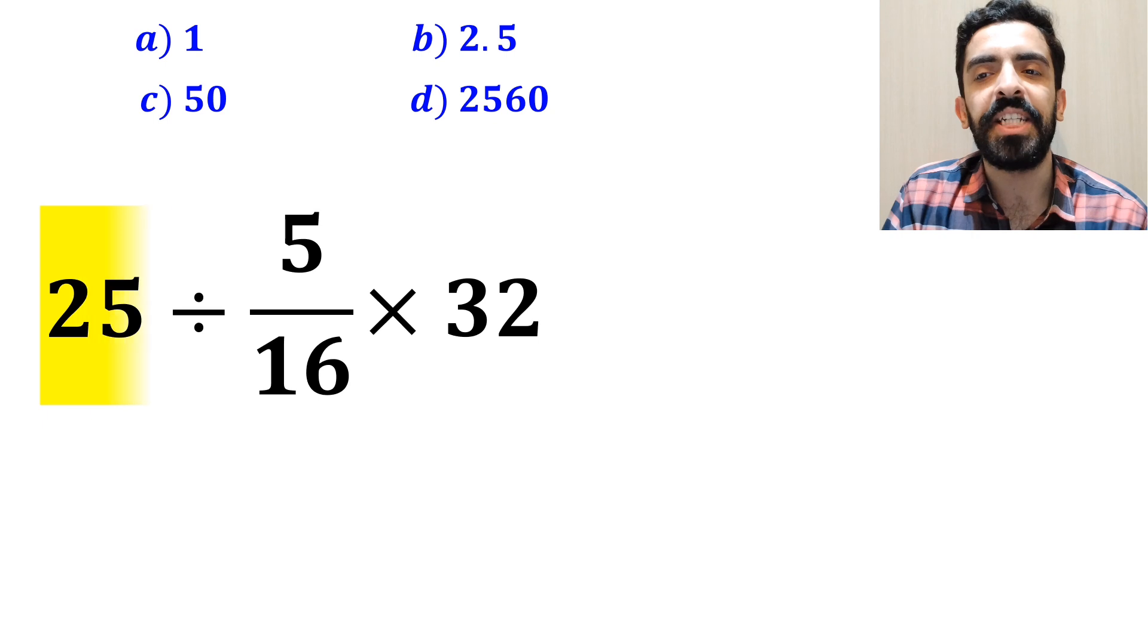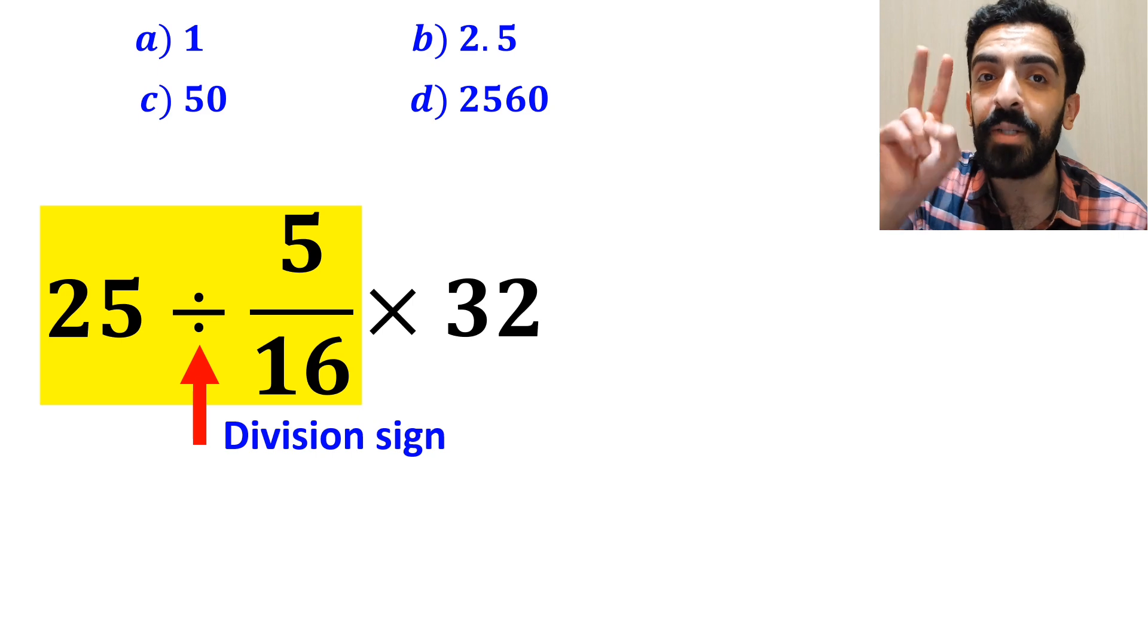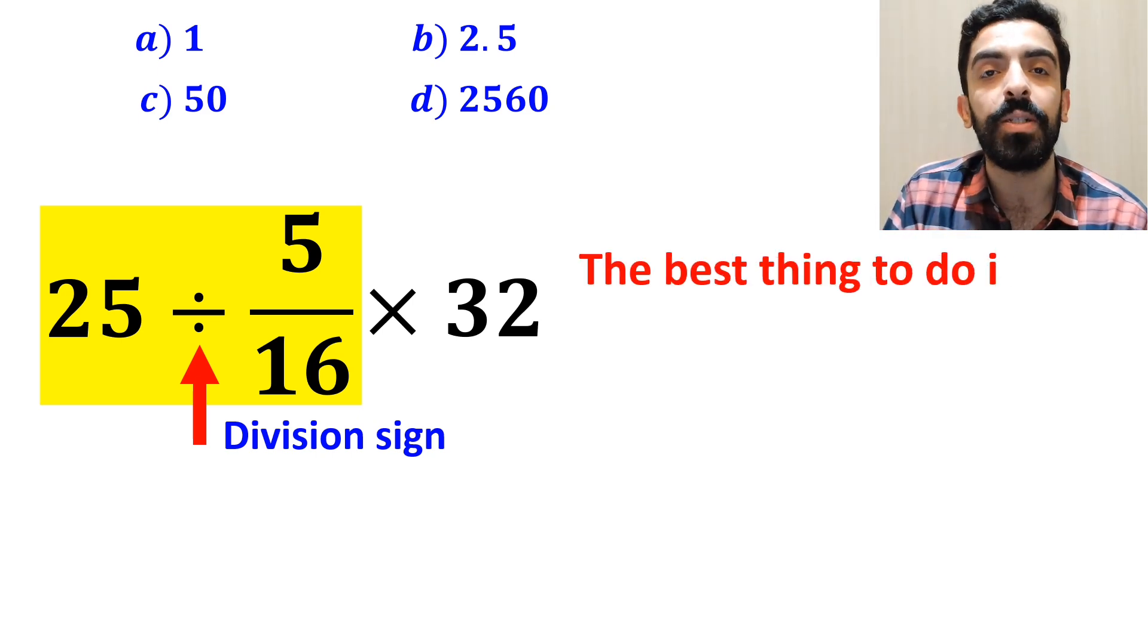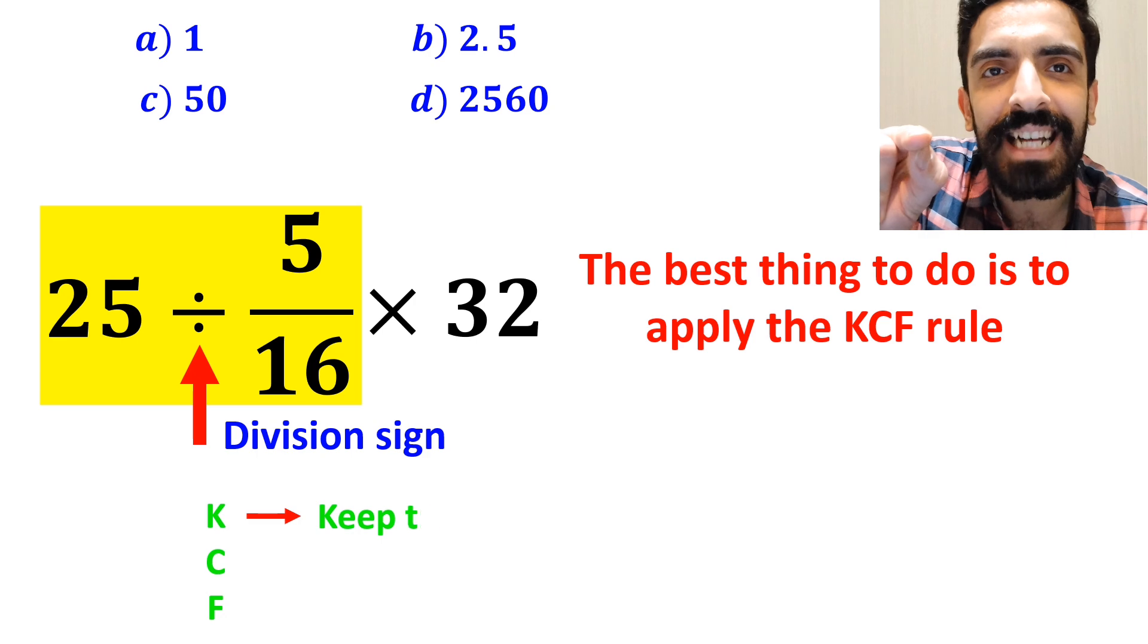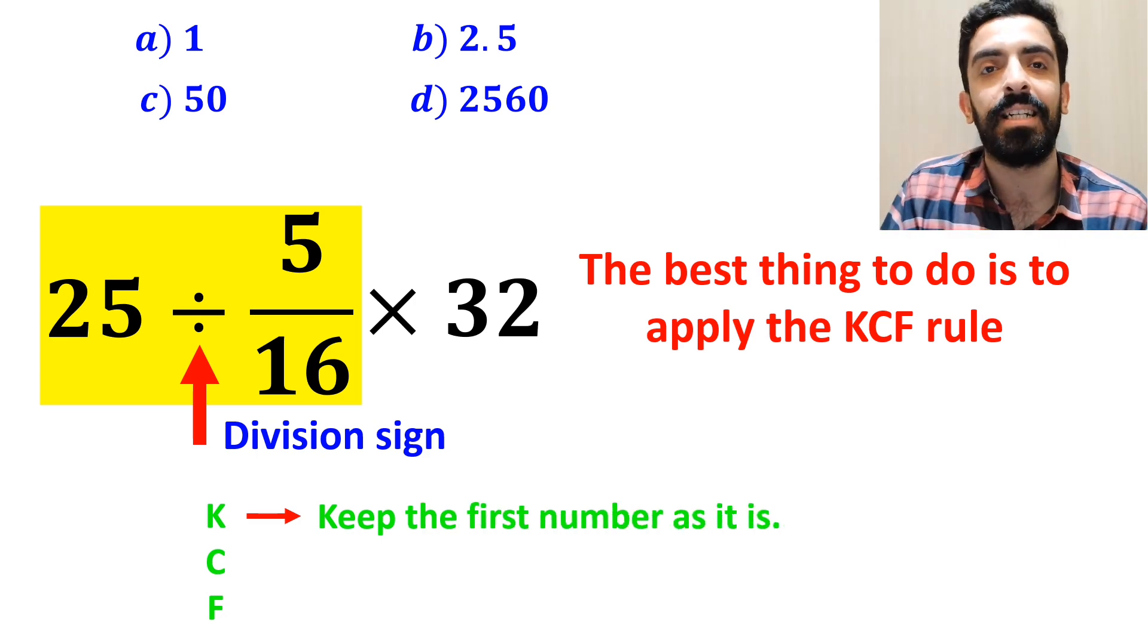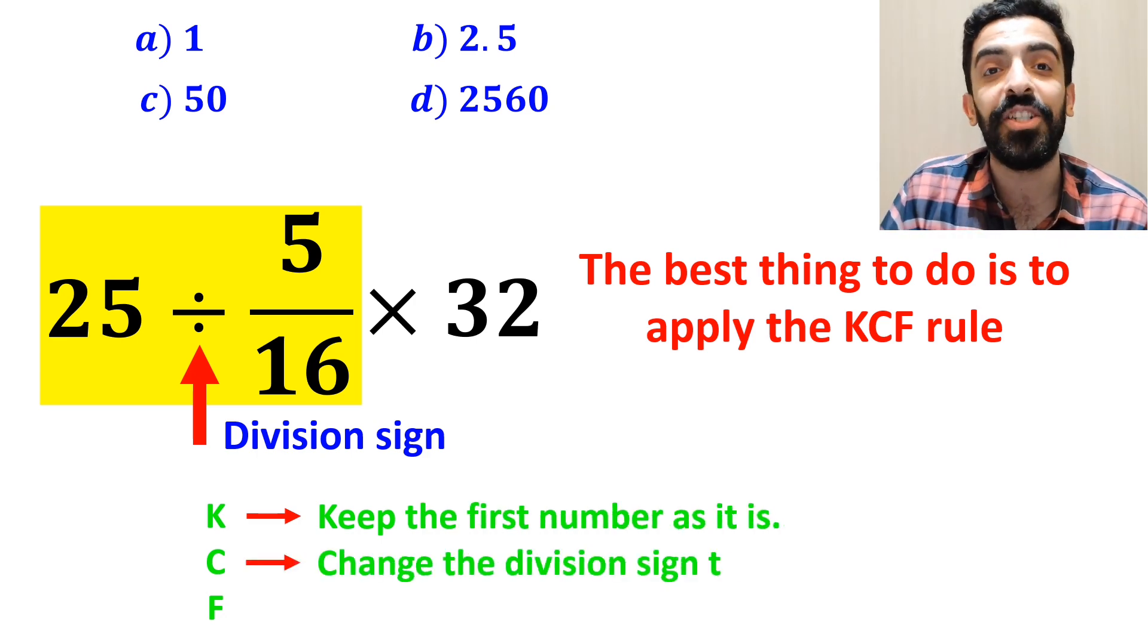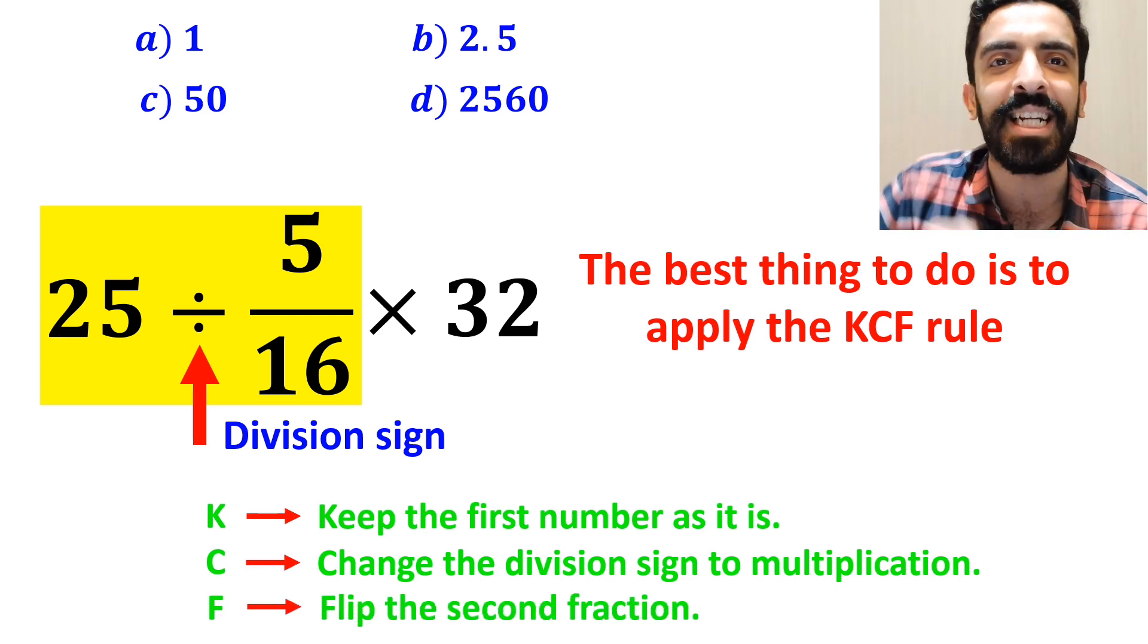So, we start with the expression 25 divided by 5 over 16. Whenever we see a division sign between two terms, the best thing to do is to apply the K-C-F rule. In this rule, K stands for keep the first number as it is, C stands for change the division sign to multiplication, and F stands for flip the second fraction.